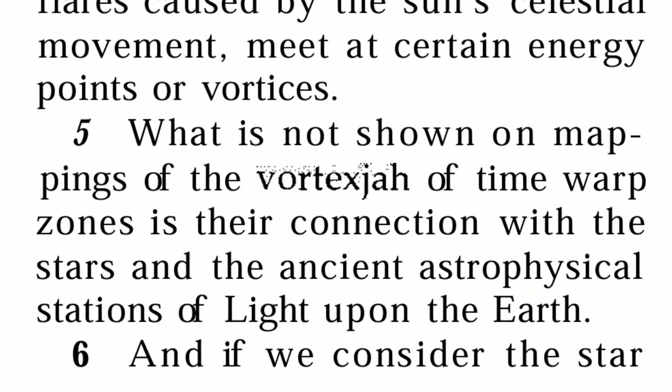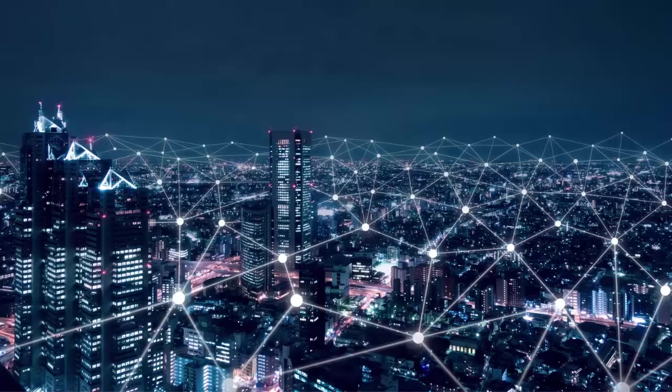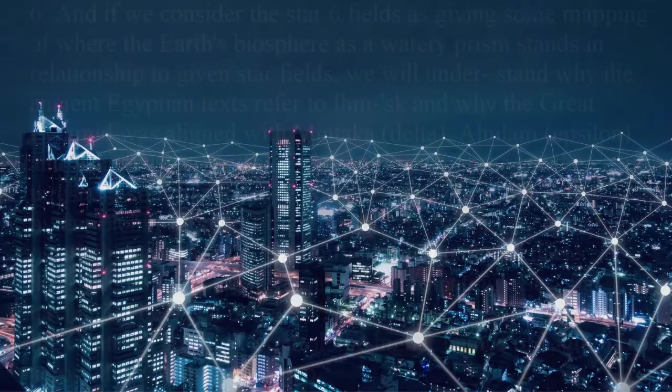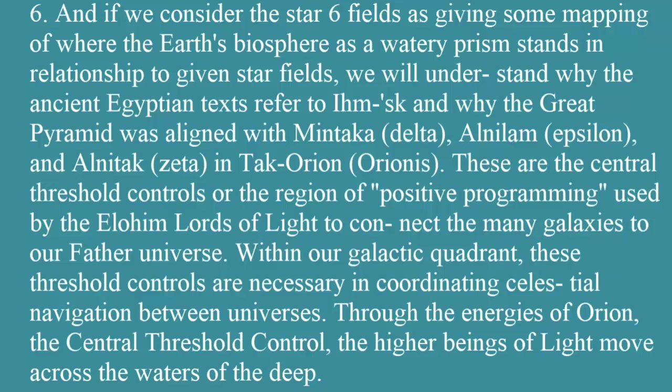What is not shown on the mapping of the vortex jaw of time warp zones is their connection with the stars and the ancient astrophysical stations of light upon the Earth. If we consider that the star fields give some mapping of where the Earth's biosphere stands in relationship to given star fields, we will understand why the ancient Egyptian texts referred to why the Great Pyramid was aligned with Mintaka, Delta Orionis; Alnilam, Epsilon Orionis; and Alnitak, Zeta Orionis.